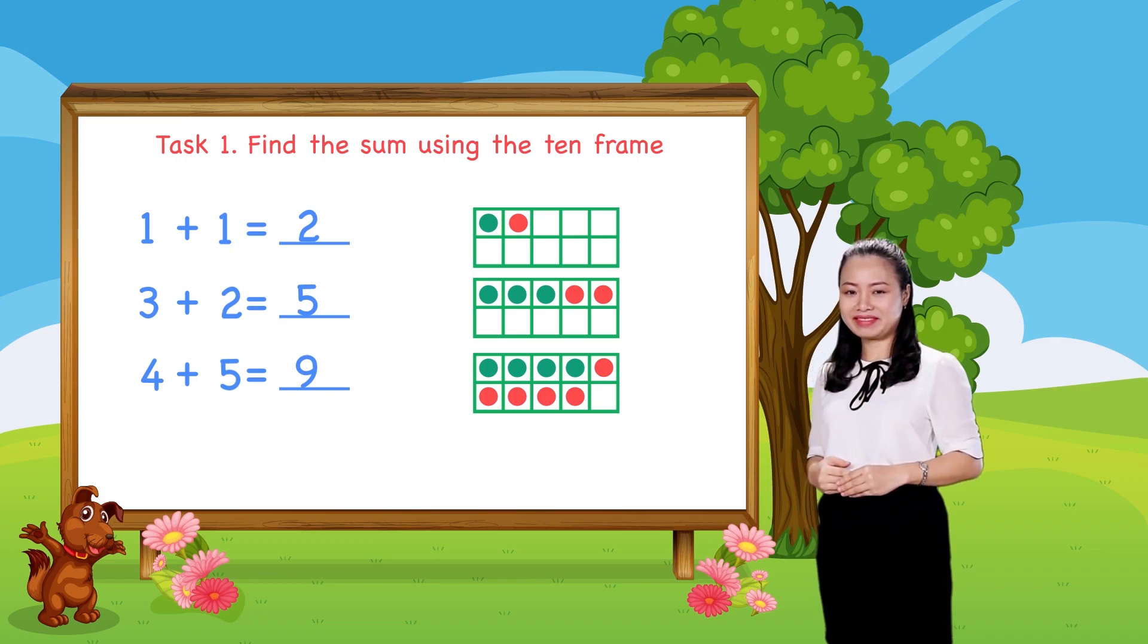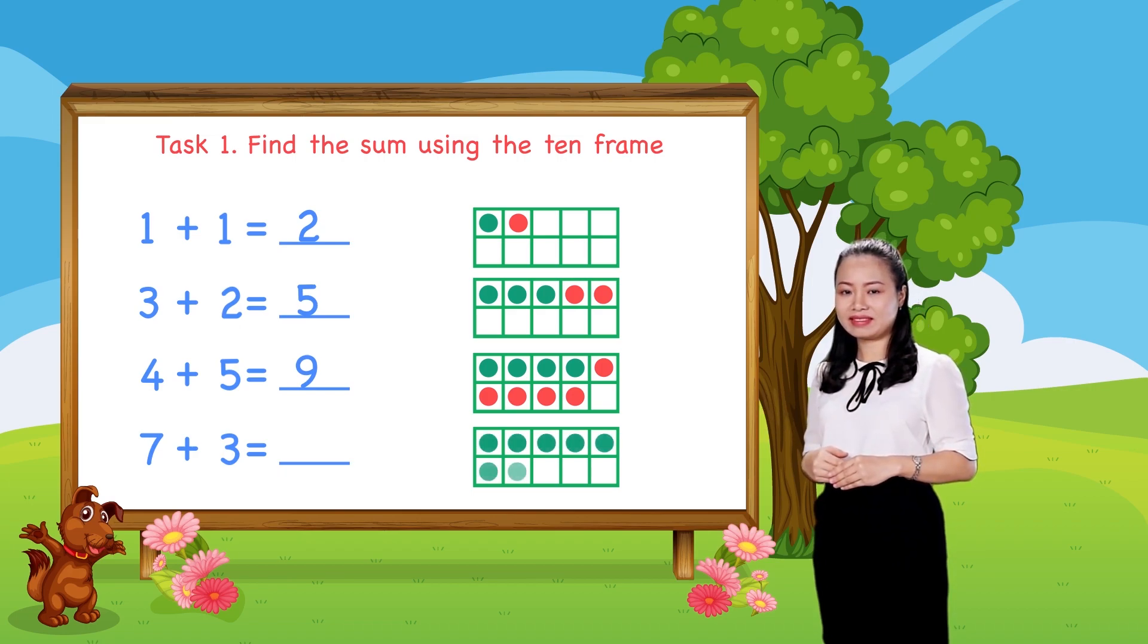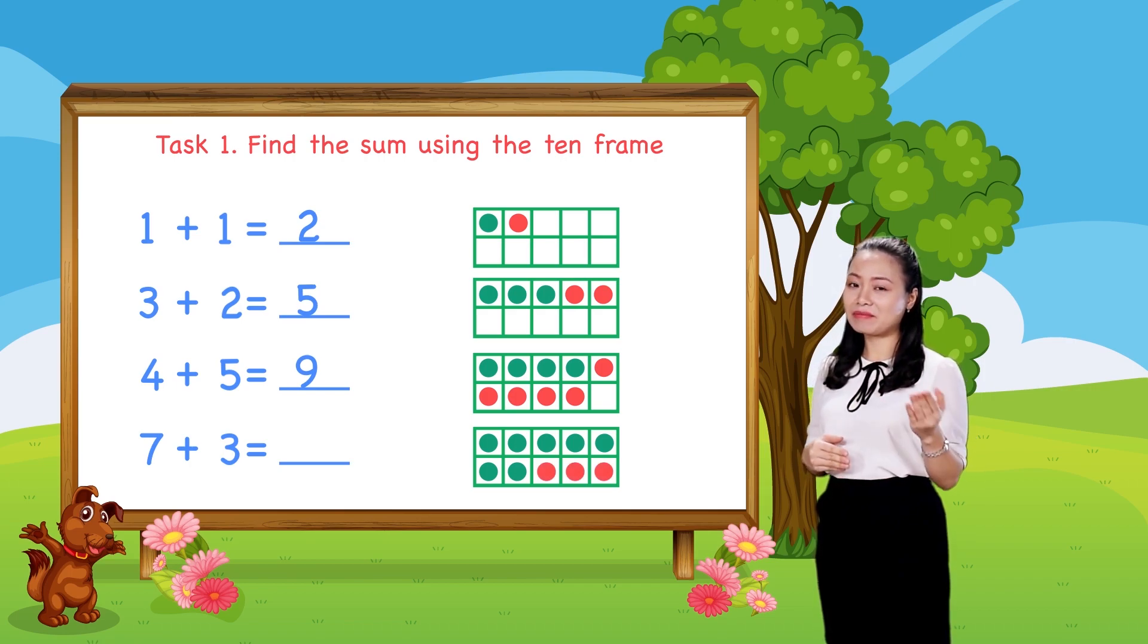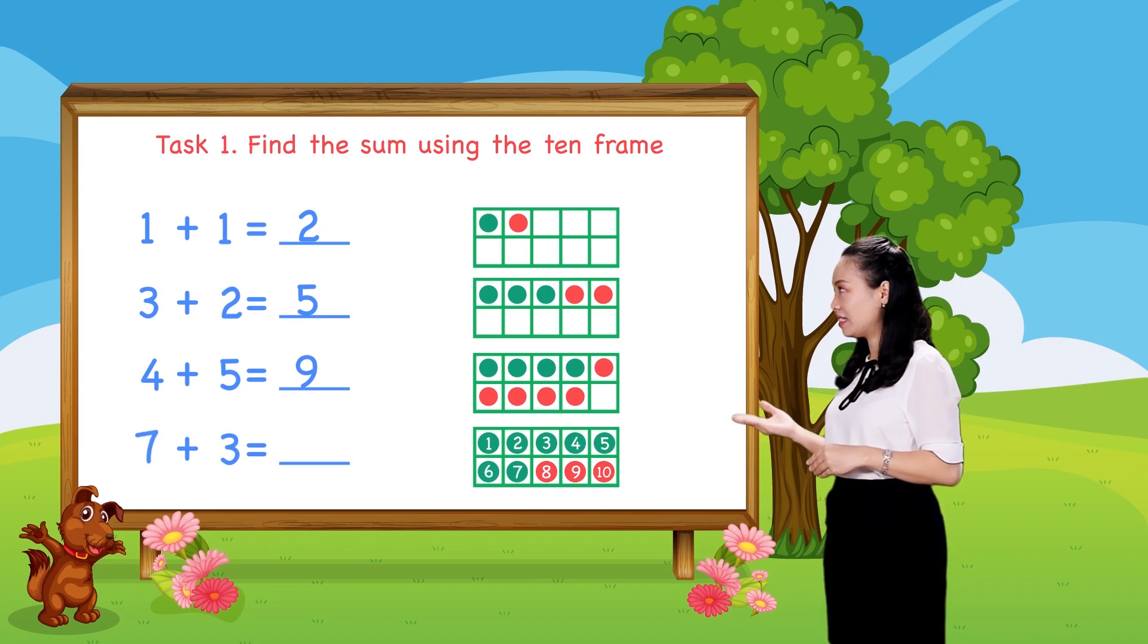The last one, to find 7 plus 3, we draw 7 dots. Then, 3 more dots in the 10 frame. Then, count the total number of dots to find the sum. Let's count. 1, 2, 3, 4, 5, 6, 7, 8, 9, 10. So, 10 dots in total. Therefore, 7 plus 3 equals 10.